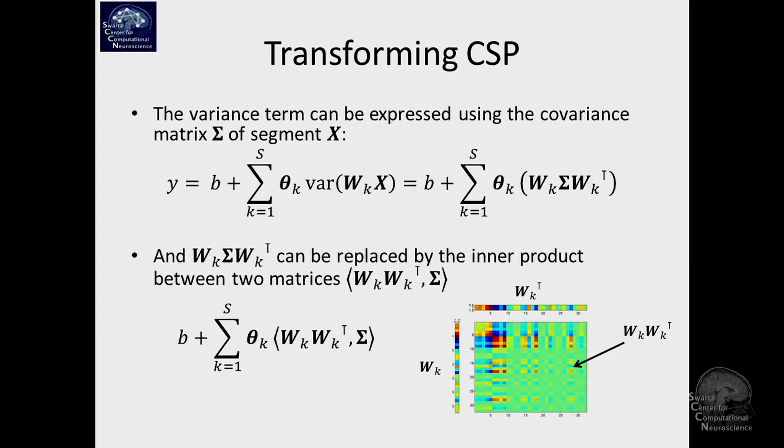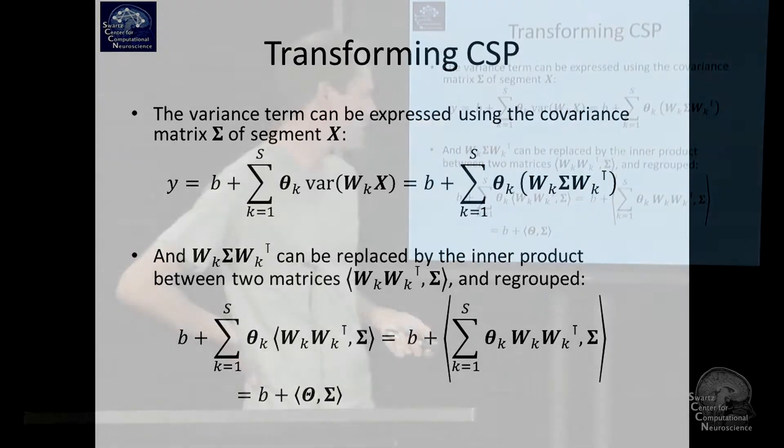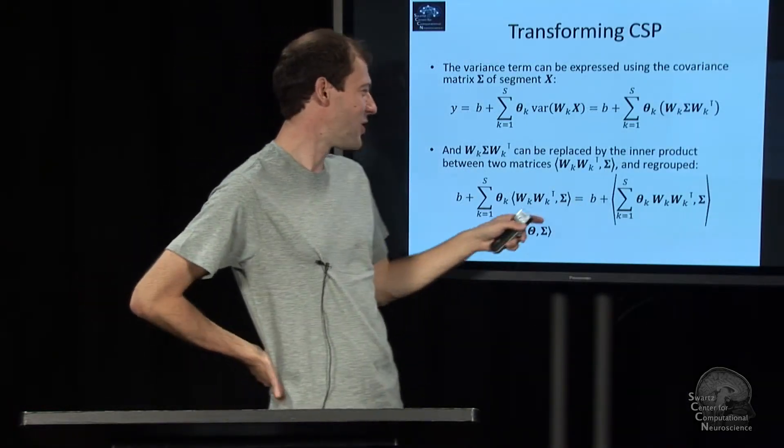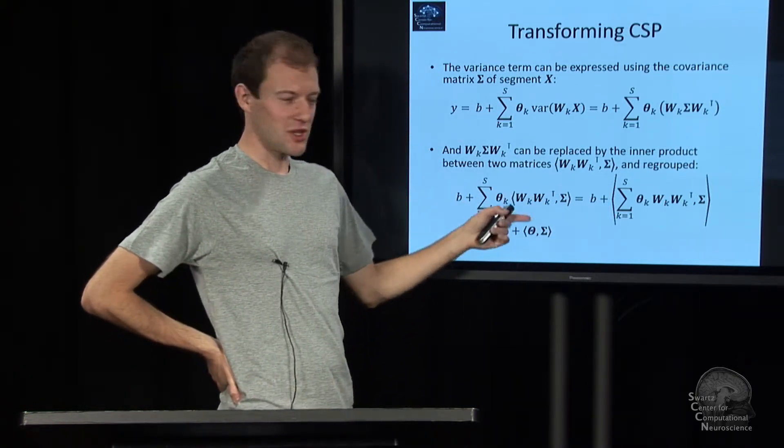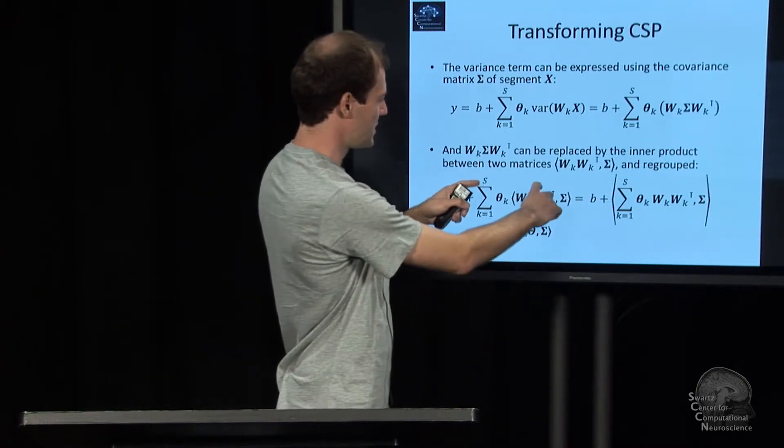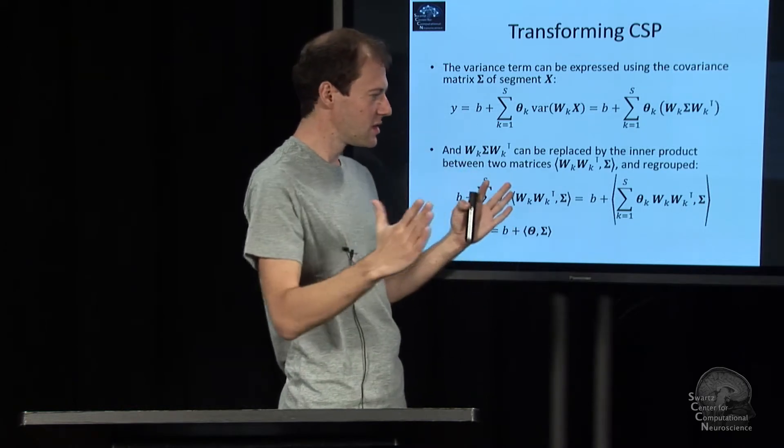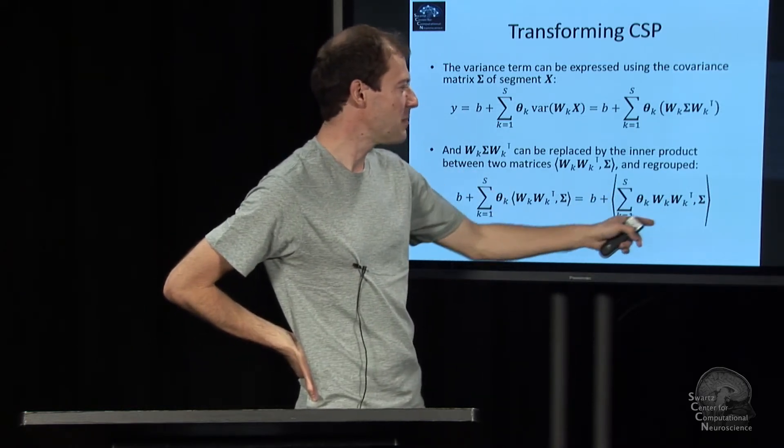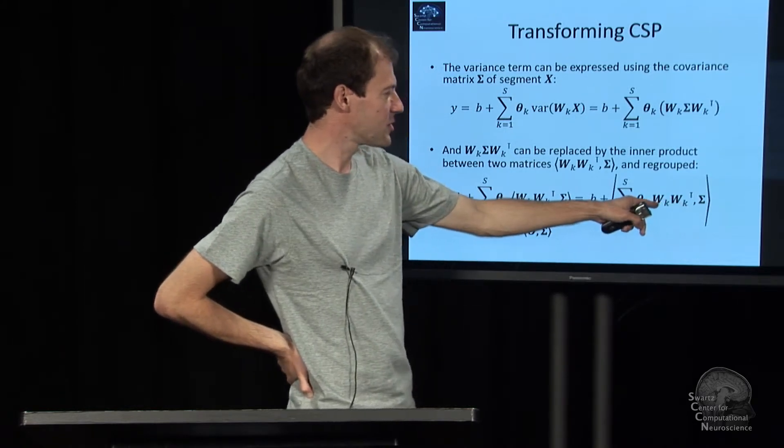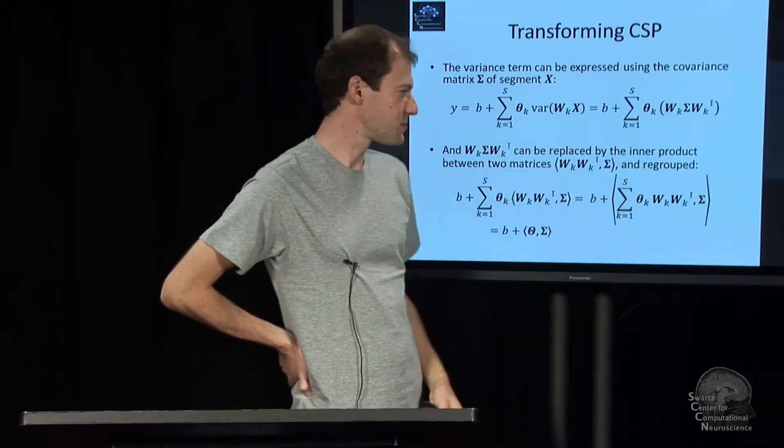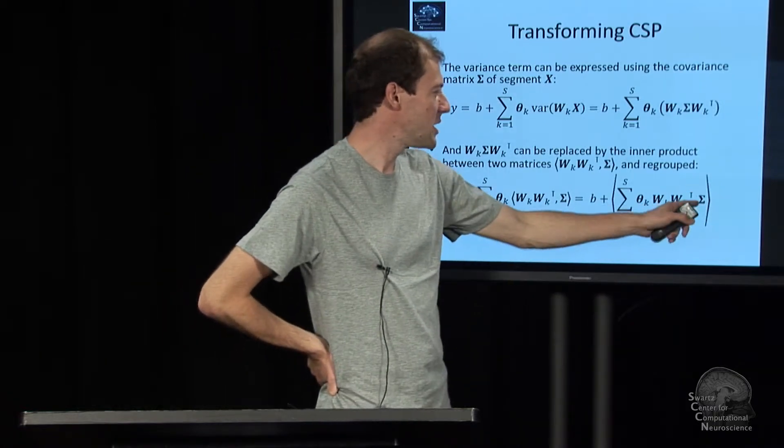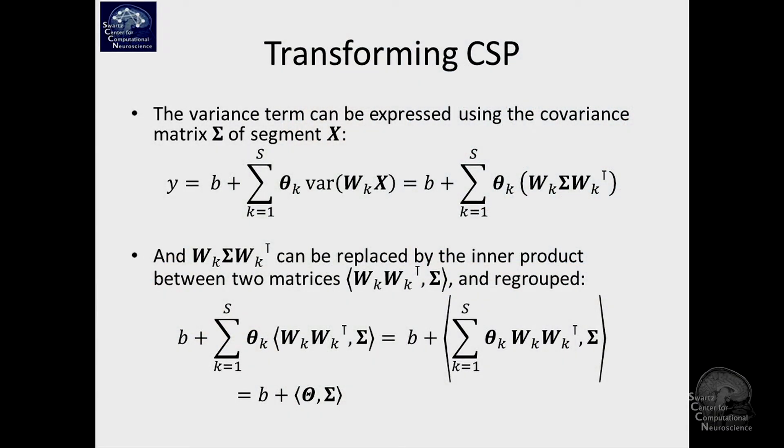Now we have b plus the sum of some weight times this inner product. We do the next simplification; we regroup things. All of these are just products and sums, so we can take this chunk and turn it into one matrix, which is all these rank one matrices summed up—now it's a rank K matrix. It's the first spatial filter multiplied out into a matrix times its weight, plus the next spatial filter multiplied out times its weight, and so on, in an inner product with Σ. Now we have just a matrix and inner product with some other matrix, adding the bias.